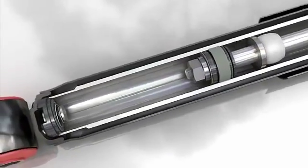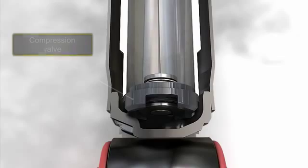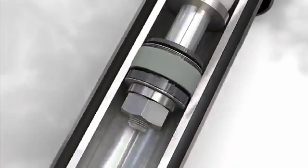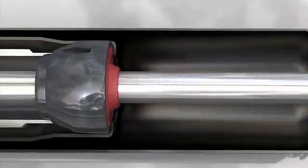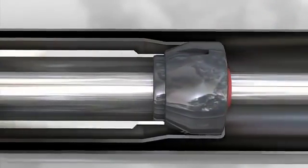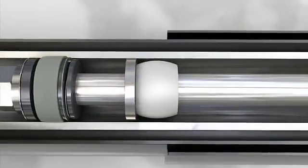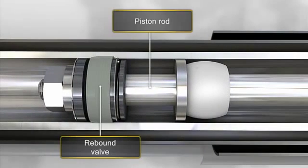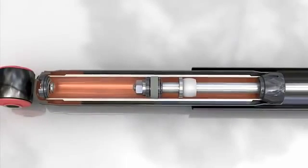Both tubes are separated, and a compression valve is located at the base of the working chamber tube. The standard design of any twin tube shock absorber also includes a piston rod with a piston valve moving up and down inside an oil-filled cylinder known as the working chamber.